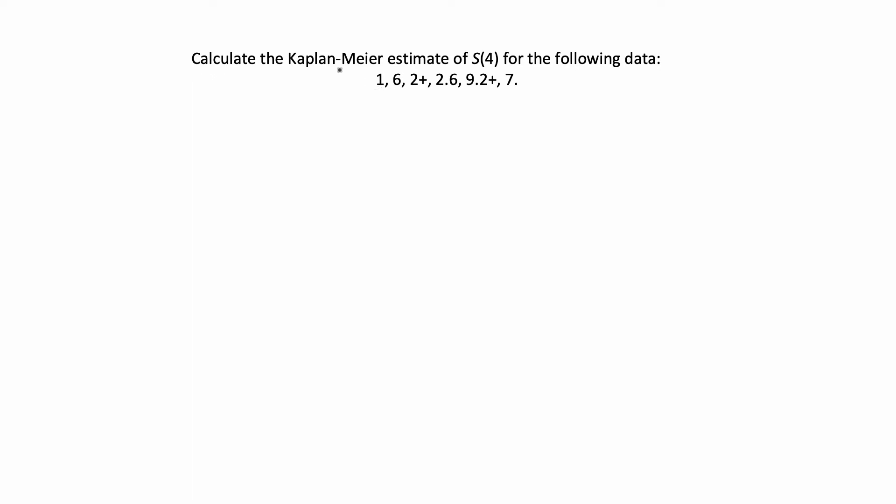For this problem it says calculate the Kaplan-Meier estimate of s of 4, which is the survival curve at time t equals 4, for the following data. I have a couple times of both censored and uncensored event times.